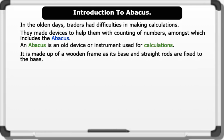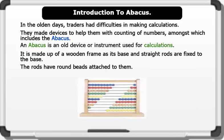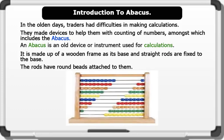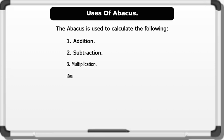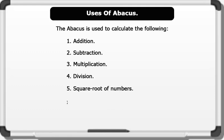It is made up of a wooden frame as its base, and straight rods are fixed to the base. The rods have round beads attached to them. Below is an image of an abacus. The abacus is used to calculate addition, subtraction, multiplication, division, square root of numbers, and cubic root of numbers.